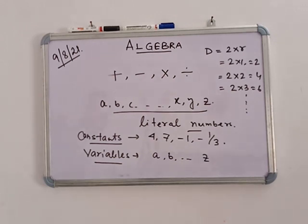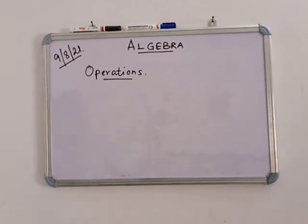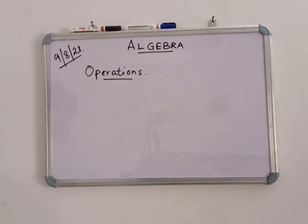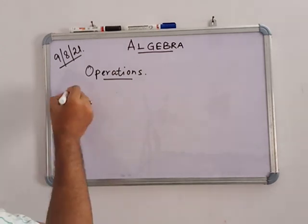So the value of R cannot be fixed — it is a variable. When the value is fixed, it is called a constant. Now we are going to discuss about operations on literals and numbers. Literal numbers obey all the rules of addition, subtraction, multiplication, and division — all rules have to be maintained and obeyed. First, we discuss addition.